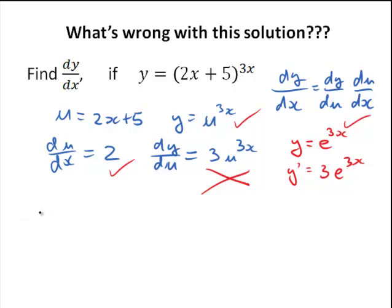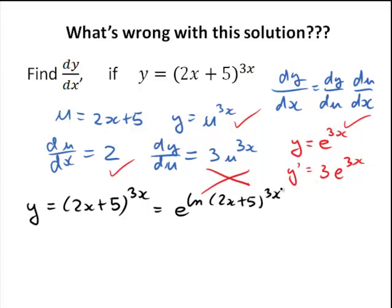Or, if you don't want to use that, another option would be to rewrite y, which is 2x plus 5 to the power of 3x, as e to the power of ln of 2x plus 5 to the power of 3x. Now, the reason for rewriting it this way is that we now have a logarithm in there, and of course we've got some nice properties of logarithms. One of them is that if we have an exponent inside, we can actually take it to the front and multiply by it.